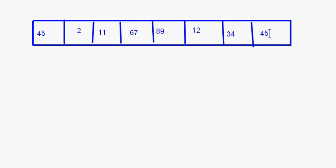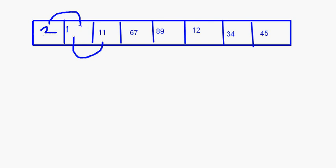First, 45 and 2 will be compared. Since 2 is less than 45, this will become 2 and this will become 45. Next comparison: 45 and 11. This 45 will become 11 and this 11 will become 45.